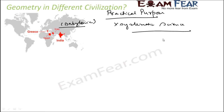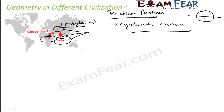For example, these civilizations accepted the fact that a diameter divides a circle into two equal halves. They just accepted it — they never tried to prove it or understand why a diameter divides a circle into two halves. In Iraq, Egypt, and India, geometry was for practical purpose, not systematic. But in Greece, Greek people emphasized on reasoning.